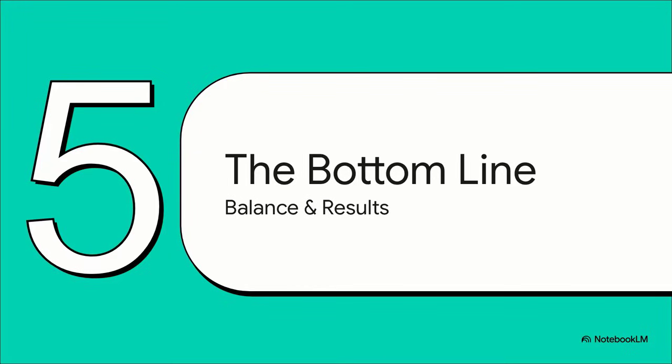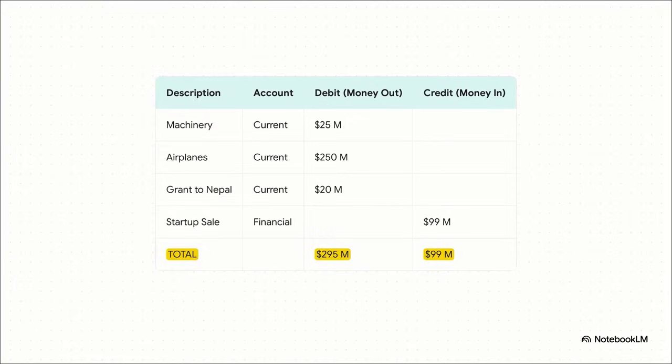This is the perfect example of that number one rule — it only counts if the money flows between our country and the rest of the world. We've sorted through all our international deals — we know what's in, we know what's out, and we know what doesn't even count. Now it's time for the moment of truth. Let's do the math and find out the bottom line. Here is our final completed ledger.